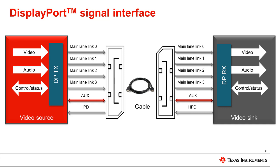The main link is used for transmission of video and audio. It consists of a number of unidirectional serial data channels that operate concurrently, commonly referred to as lanes. The aux channel is a half-duplex bi-directional data channel used for control and status information. HPD is a 3.3-volt signal provided by the sink to the source.